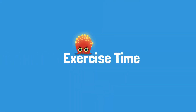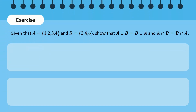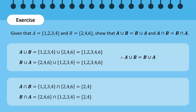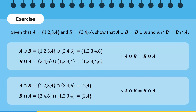Let's do an exercise. A is a set containing numbers 1, 2, 3, and 4. B is a set containing numbers 2, 4, and 6. Can you use these sets to verify the commutative laws of union and intersection? Since A union B is a set consisting of the numbers 1, 2, 3, 4, and 6, while B union A is a set with the same elements. Therefore, A union B is equal to B union A. Similarly, A intersection B and B intersection A have the same elements. Therefore, they too are equal.